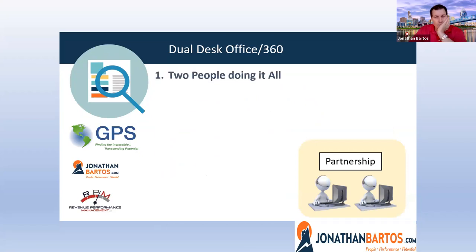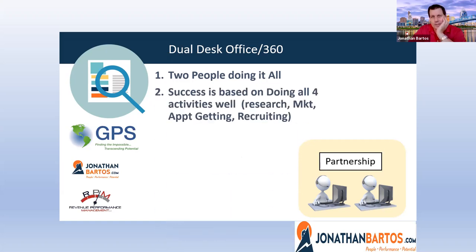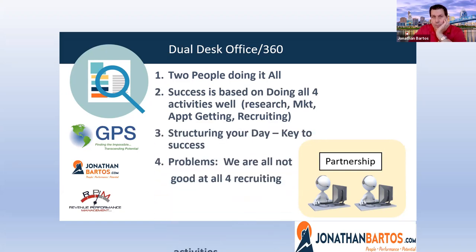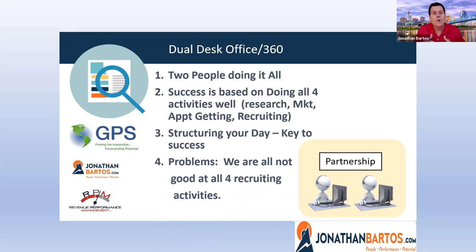The second popular model is a dual desk office — two people, maybe in the same or different marketplaces, doing all activities themselves. Success is based on doing all four activities, and structuring their day will be the key. But the problem with the dual desk model is we're not all good at four functions today. I can guarantee 90% of everyone, including me six weeks ago, were horrible at appointment getting and couldn't figure out how to do it. That's a major thing we need to focus on.